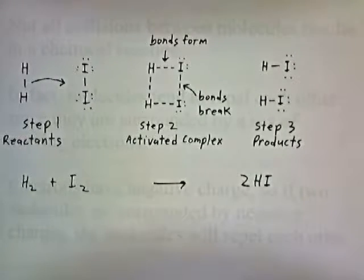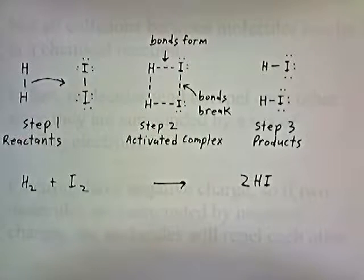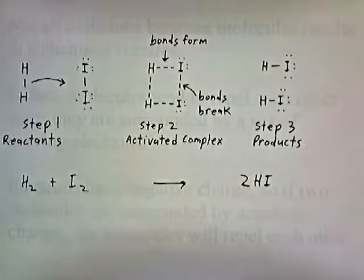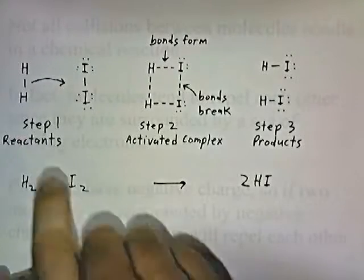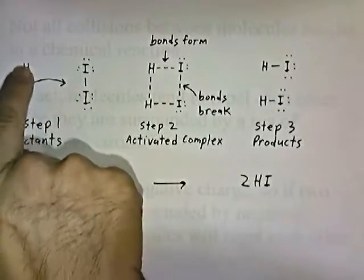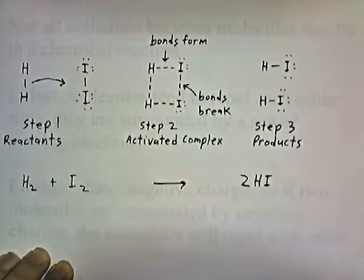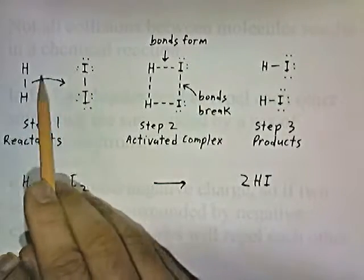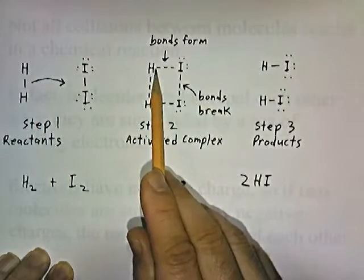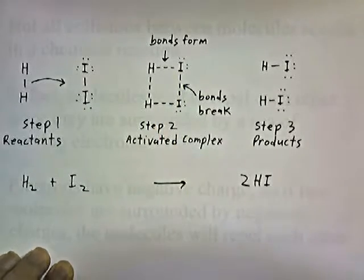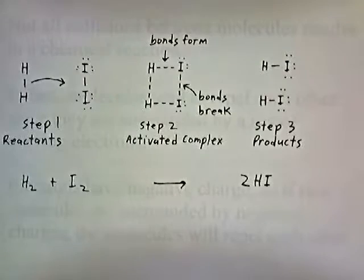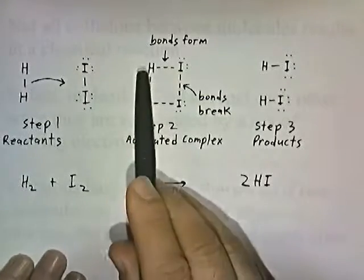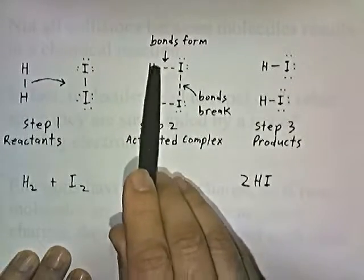In step two, the molecules collide. The bond between the hydrogen atoms begins to break, and the bond between the iodine atoms also begins to break. At the same time, bonds begin to form between the hydrogen atoms and the iodine atoms. This is called the activated complex. The collision causes these bonds to start to break, indicated by a dotted line, while new partial bonds forming are also shown as dotted lines here and here.